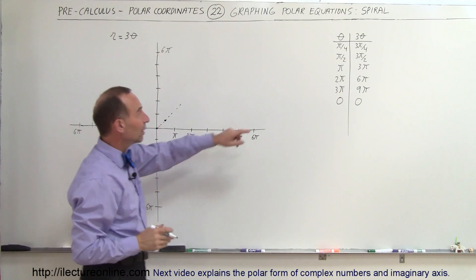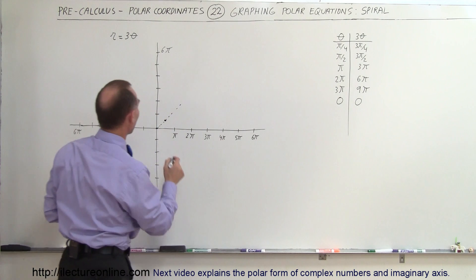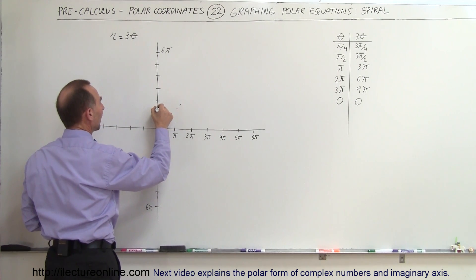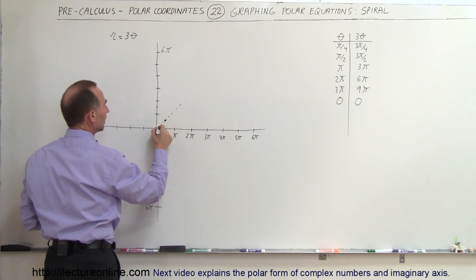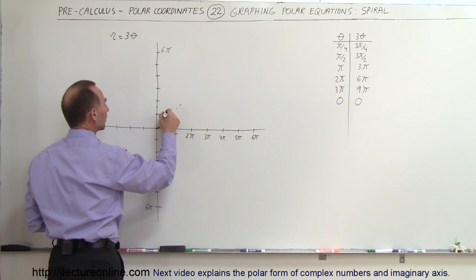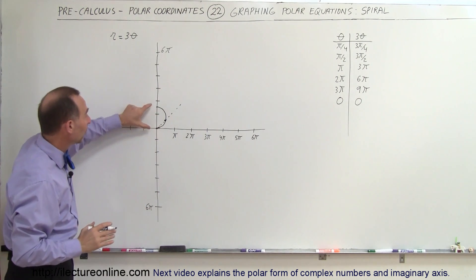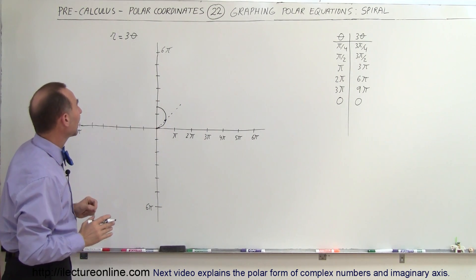Now at 90 degrees, or π over 2, r is 3π over 2, or 1 and a half π, so that puts us right about there. So you can see that the spiral comes out like this, slowly gets bigger and bigger, and at this point at an angle of 90 degrees or π over 2, r is now already 3π over 2 in length.